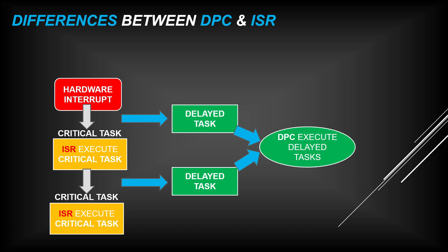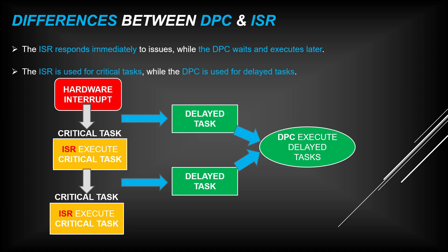Now let's see the differences between DPC and ISR. The first difference: ISR responds immediately to interrupts while DPC waits to execute tasks later. The second difference: ISR is used for critical tasks while DPC is used for delayed tasks. So when a hardware interrupt occurs, critical tasks are executed by ISR first, and all delayed tasks are executed later by DPC.